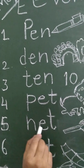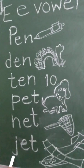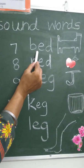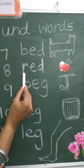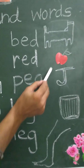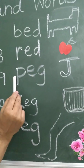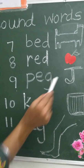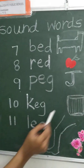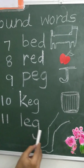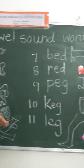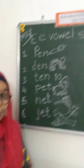N-E-T: Net. J-E-T: Jet. B-E-D: Bed. R-E-D: Red — this is red color, apple is red. P-E-G: Peg. K-E-G: Keg. L-E-G: Leg. You have to write these words in your notebook.